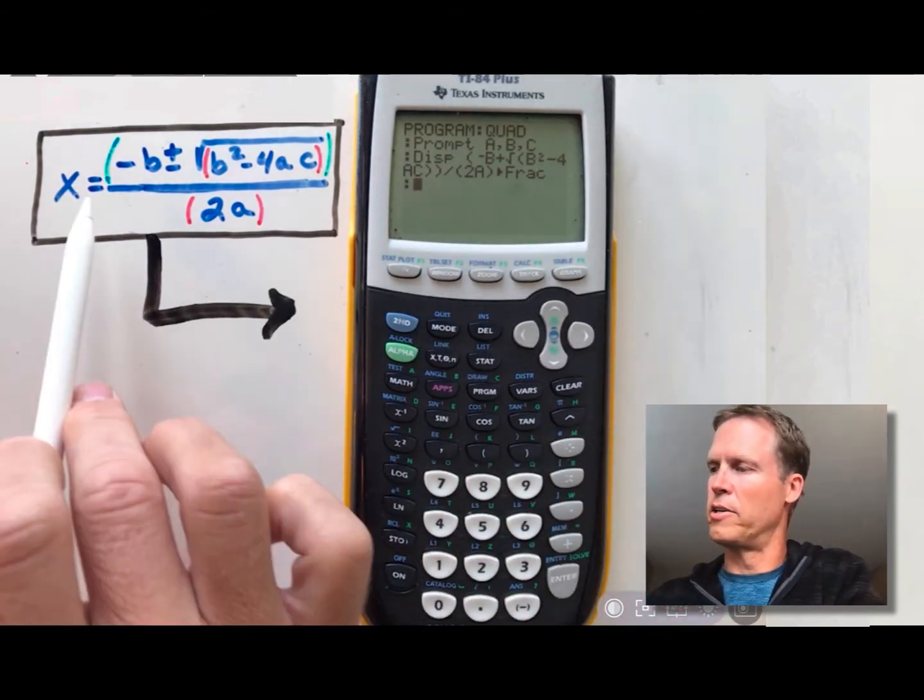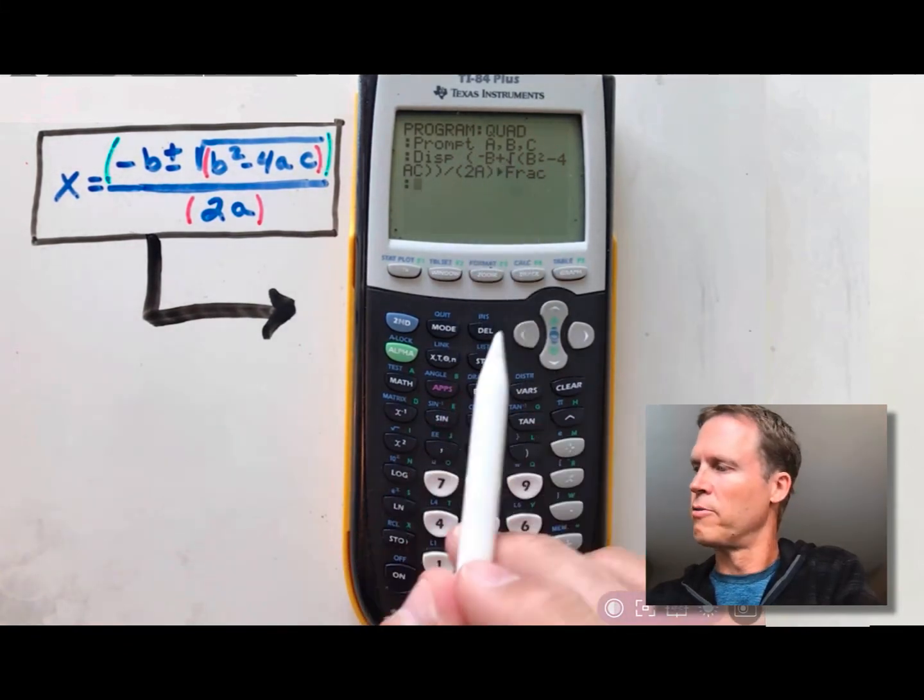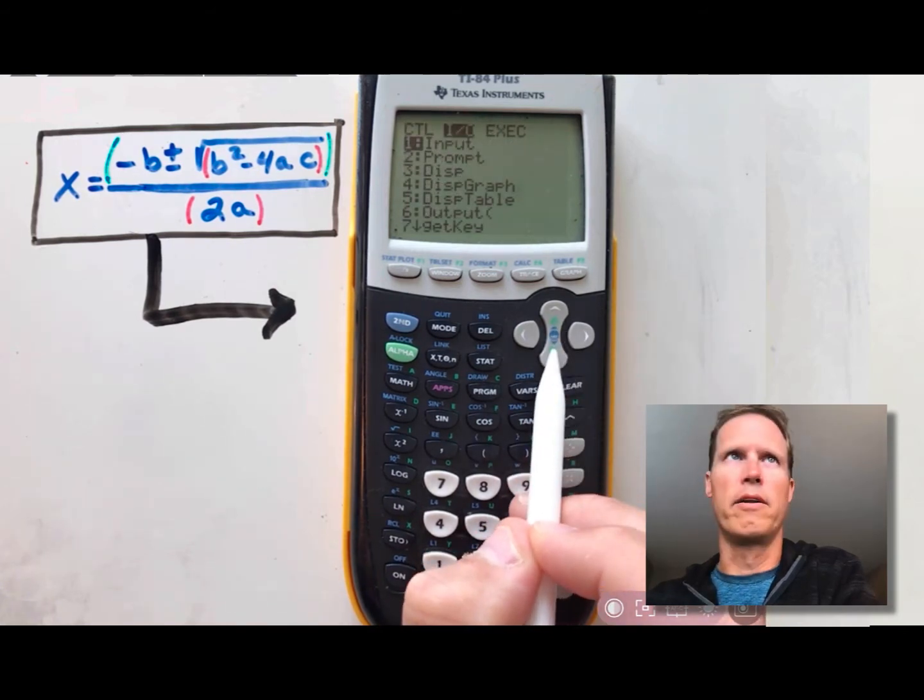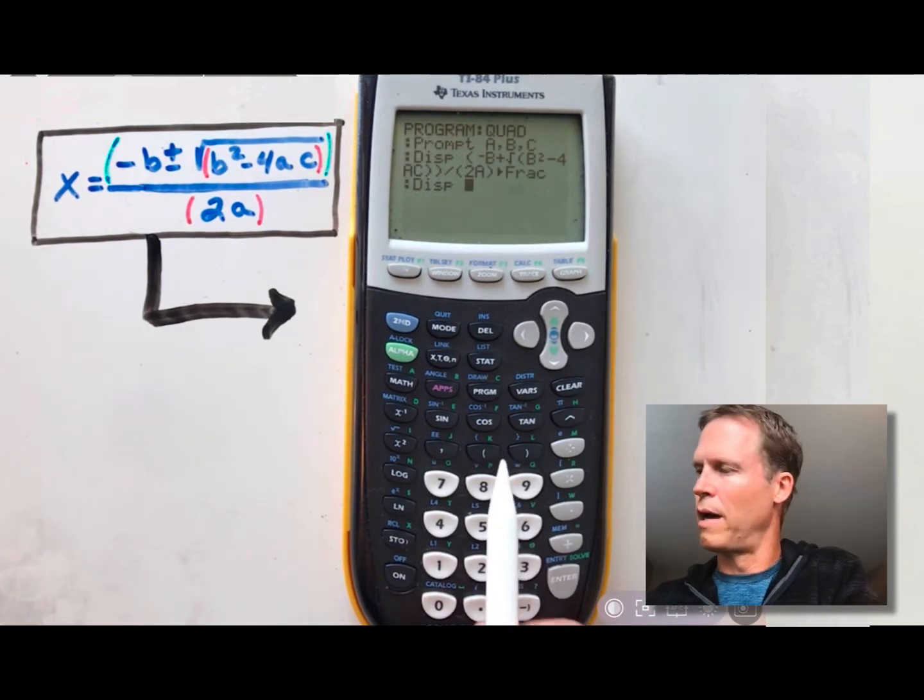Next, we're going to do the second calculation. Do the exact same thing again, but we're just going to change that plus sign right here to a minus. So I'll do it again one last time, and then we're done. So go program, press the right arrow, and then you're going to choose the option for display again, option 3, enter, then we'll type it all out again.